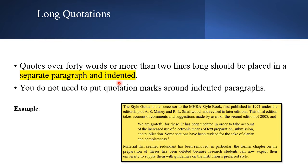Long quotations — over 40 words or more than two lines — should be placed in a separate paragraph and indented. You do not need to put quotation marks around indented paragraphs. At the end of the indented quote, you give a superscript footnote number — for example, a small superscript '1' — and the bibliographical detail for that quote appears in footnote number one at the bottom of the page.